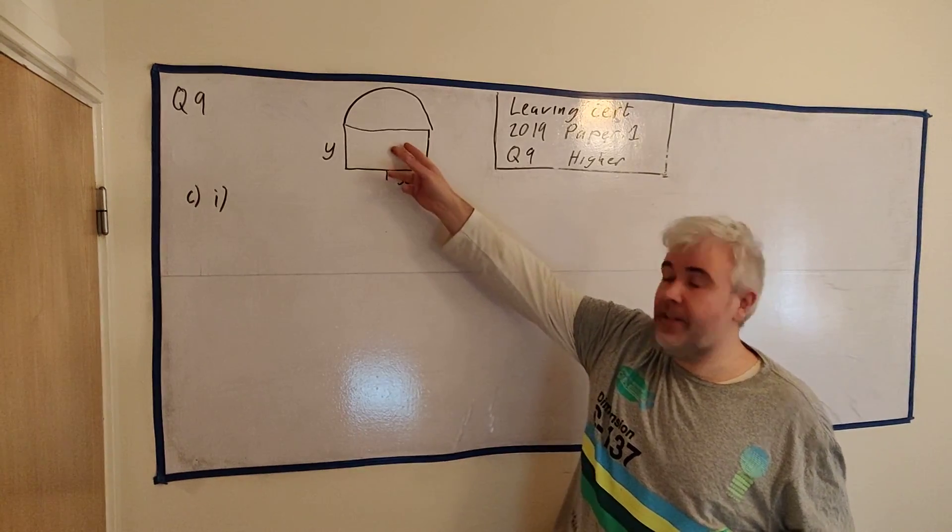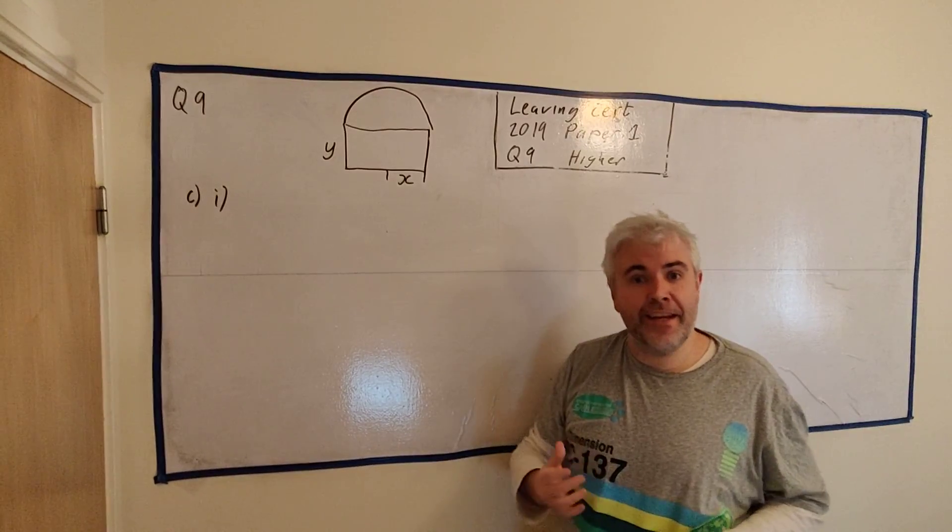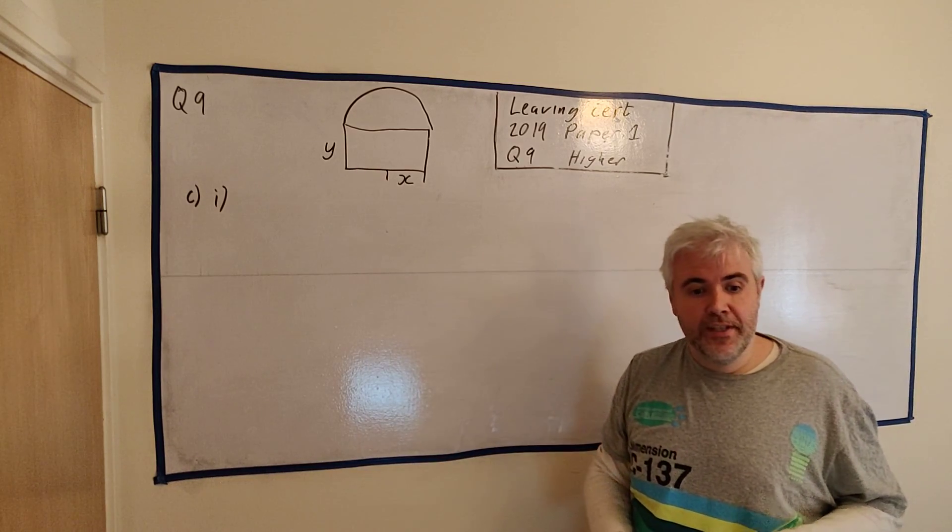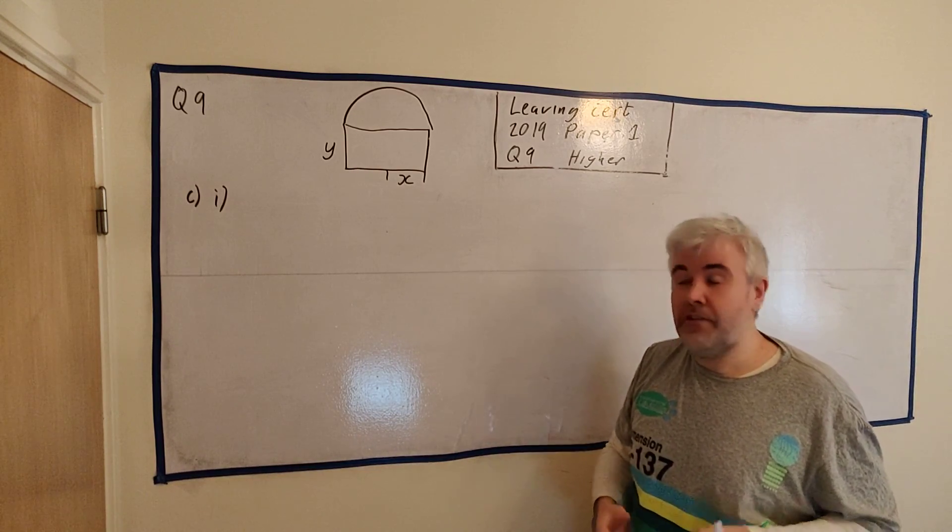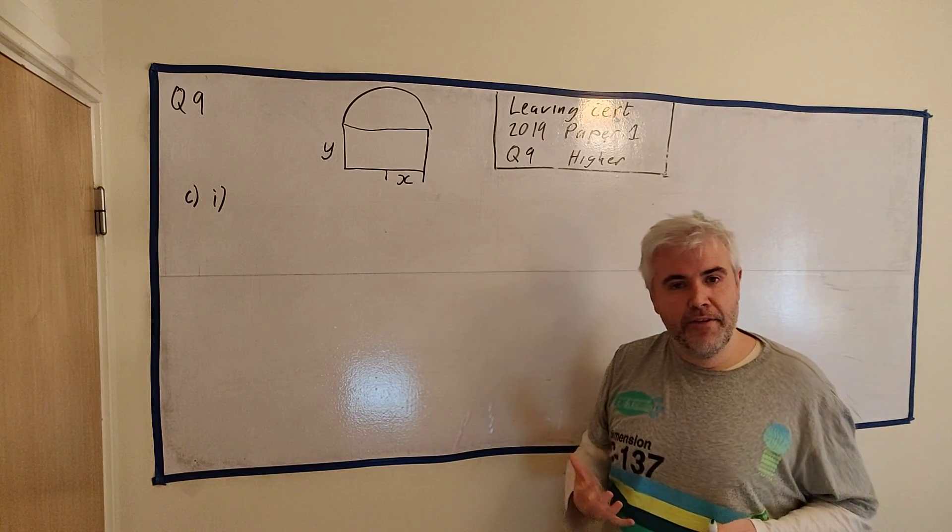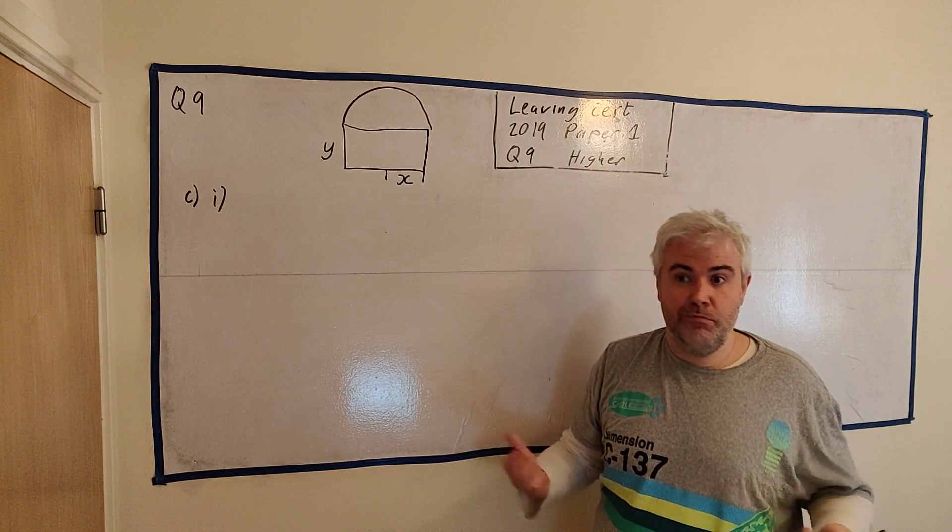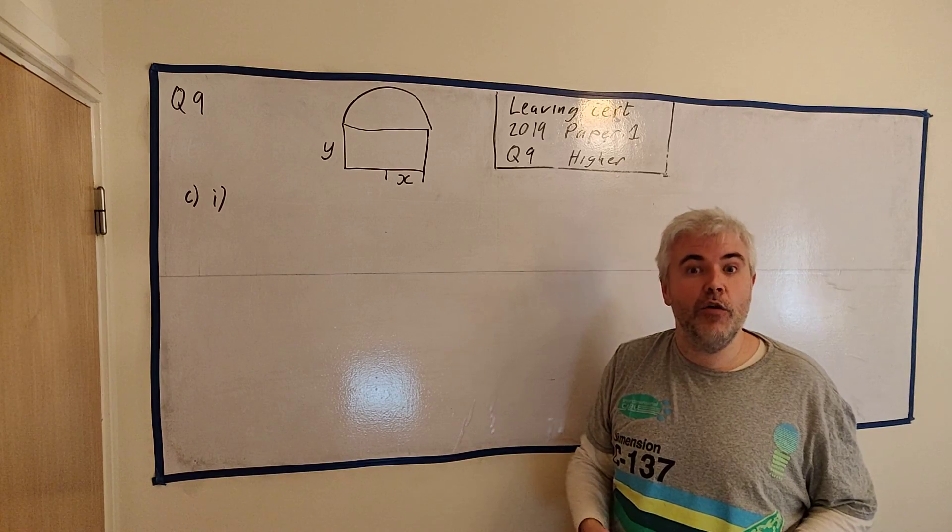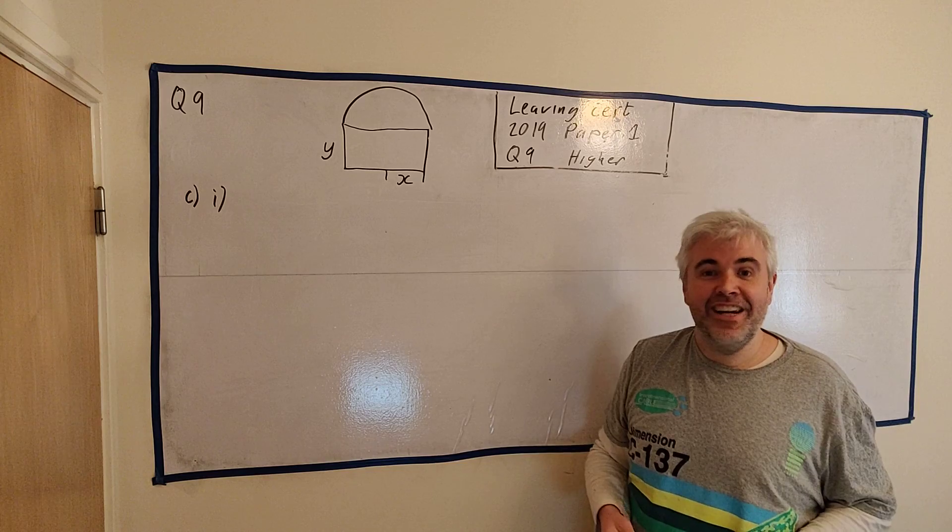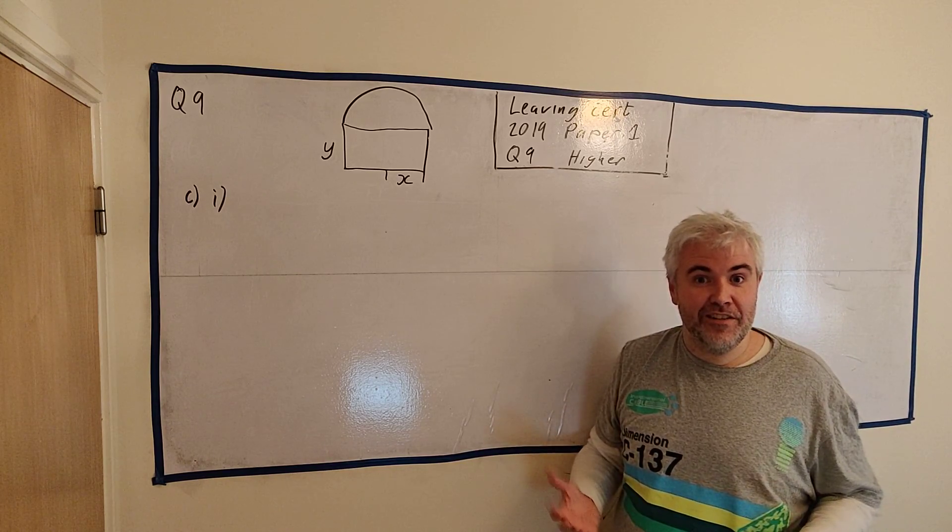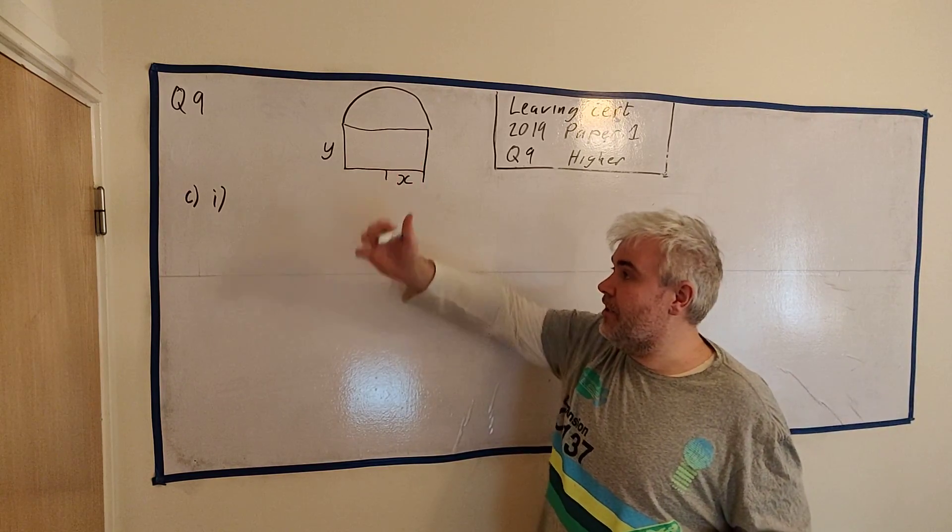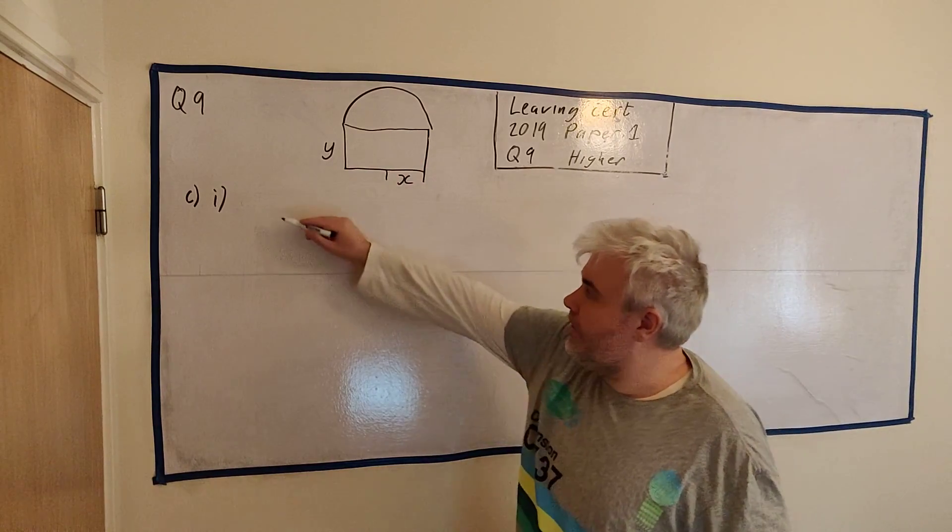For C, we're going to go back to this Norman window, and it asks us to show that the area of this window is the equation they give you. Now, I didn't write it down because, once again, I do think it's quite useful to forget that they gave us that answer. Use it as a hint, definitely, if you get stuck. But try and forget, because it often confuses students more than it should. They're like, well, what do I do with this? They go and try and use the equation they gave them. So, simply read the question a little better. It asks you to show that this equation is true. So, basically, they want you to find this equation yourself. And the equation is the area of this.